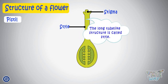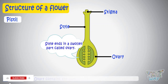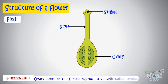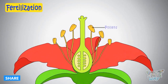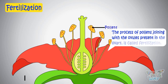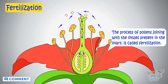The style ends in a swollen part called the ovary, and this ovary contains the female reproductive cells called ovules. When pollens from the anther of the stamen join with the ovules present in the ovary, we call it fertilization.